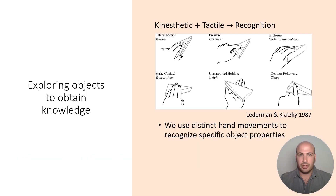In order to obtain knowledge about an object, humans use distinct hand movements to recognize specific object properties. For example, lateral motion for sensing texture, and following contours for sensing shapes.